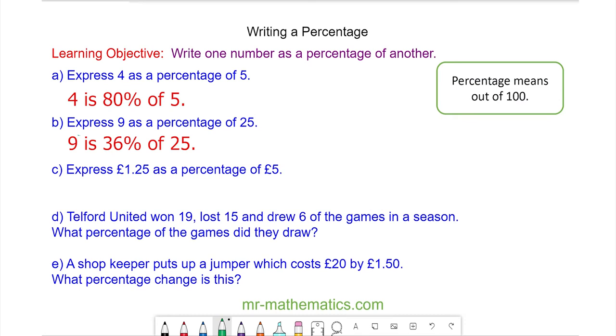Okay, for question C we're going to express £1.25, which is our numerator, as a percentage of £5. So £5 is our denominator, and this is quite difficult because we have a decimal on the numerator, but we can convert it to an integer by using pence. So we have 125 pence over 500 pence, and we can simplify this fraction by dividing both by 5.